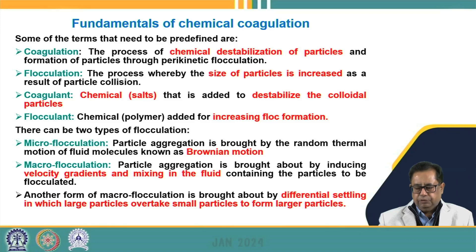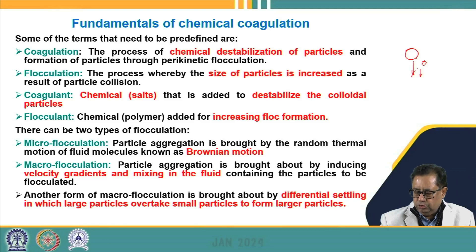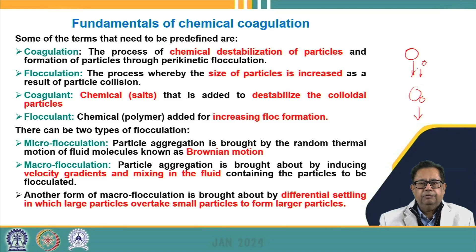Macro-flocculation can also be brought about by differential settling. Larger particles settle faster while smaller particles settle at a lower velocity. As these particles come closer during settlement, they can coalesce and form a bigger particle that settles at a higher velocity. This is also known as macro-flocculation and happens due to differential settlement of larger and smaller particles.